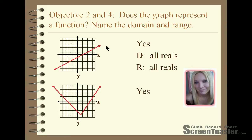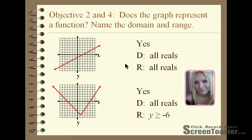For the second graph, this one would pass the vertical line test. Any vertical line through any part of the graph would only cross at one point. The domain is all real numbers, because it goes to the left and to the right with no restrictions on the x values. The range would be y greater than or equal to negative 6, because the graph doesn't have an upward boundary since it goes up forever, but it does have a lower boundary — the graph does not go down past negative 6.